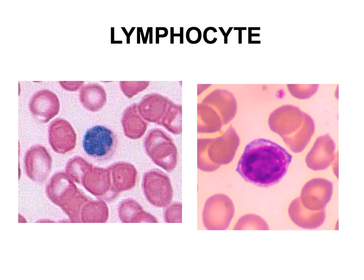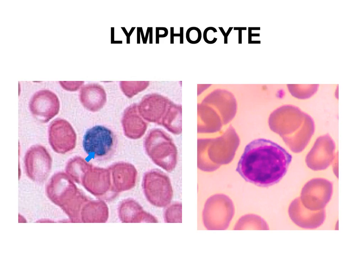Here we have our lymphocytes. Notice that the nucleus is very large for the size of the cell, staining a dark purple color and almost filling the cell, leaving just a tiny rim of cytoplasm. Lymphocytes are the second most numerous leukocytes, accounting for 25% to 35% of the total white blood cell count. An increase in lymphocytes would suggest an infection such as mono or some type of chronic infection.